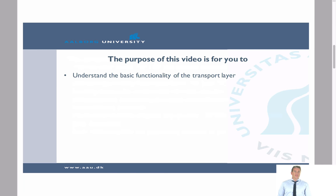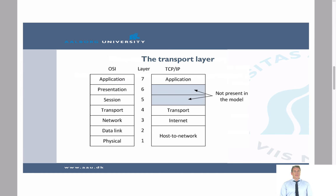The purpose of this particular video is for you to understand the basic functionality of the transport layer. If we look at the OSI model and the TCP/IP protocol stack, we can see that the transport layer is usually referred to as layer number 4. It is between the network layer and the application layer in TCP/IP — this is where we have our interfaces.